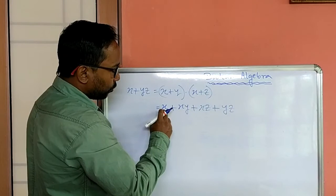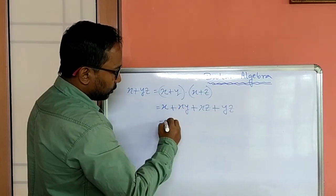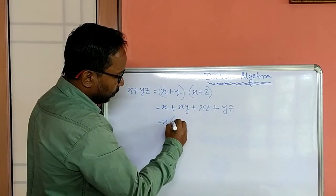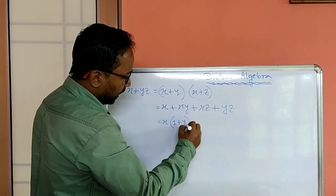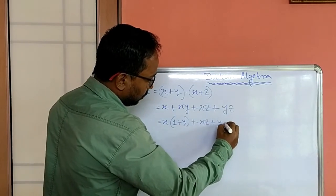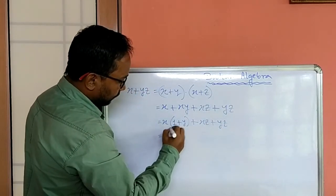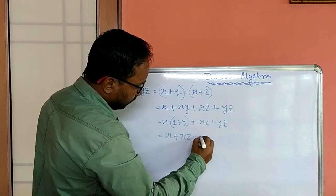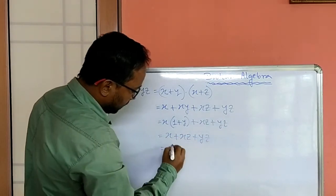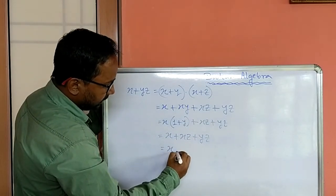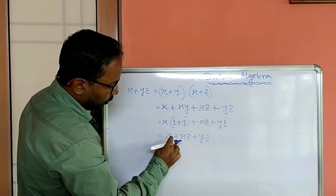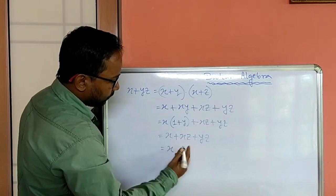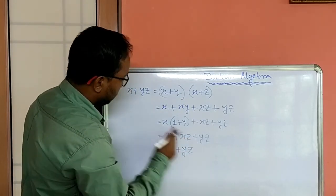Now if I take x common, so here 1 plus y equals 1. So x into 1 equals x. I am showing 1 plus y, and here xz, yz. Then from here x into 1 means x plus xz plus yz. Now x plus xz means again x, because if I take x common, here it will be 1, and here plus z. So 1 plus z equals 1. That equals x. Then x plus yz.